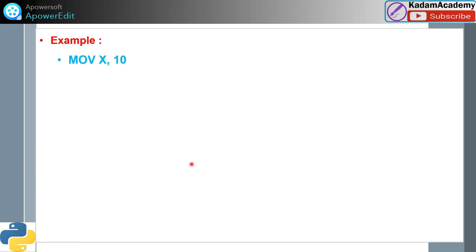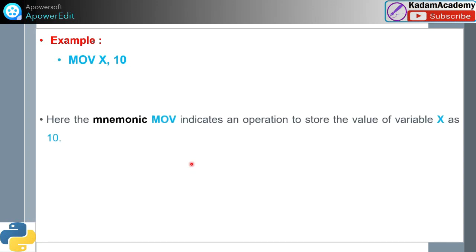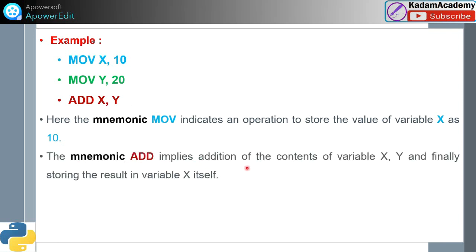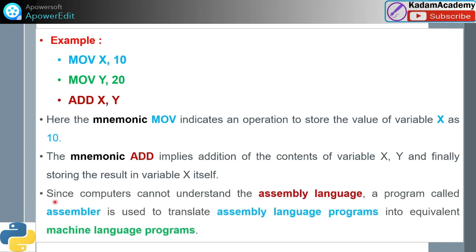In this example, 'MOV X, 10' means the mnemonic MOV indicates an operation to store the value of variable X as 10. Next, Y is assigned 20, and 'ADD X' implies addition of the contents of variables X and Y, storing the result in variable X itself. Since computers cannot understand assembly language, a program called an assembler is used to translate assembly language programs into equivalent machine language programs.